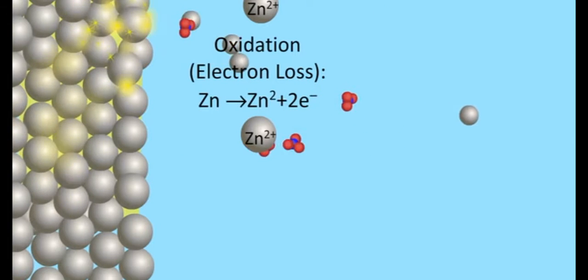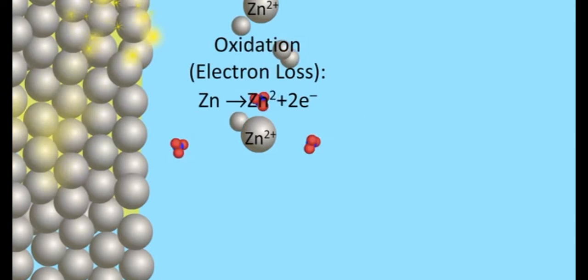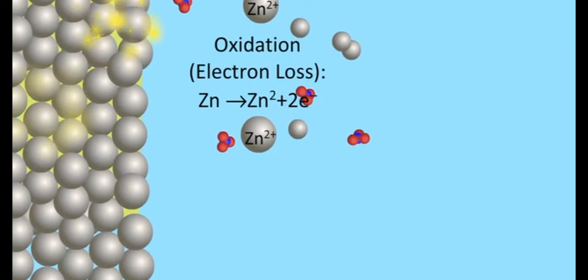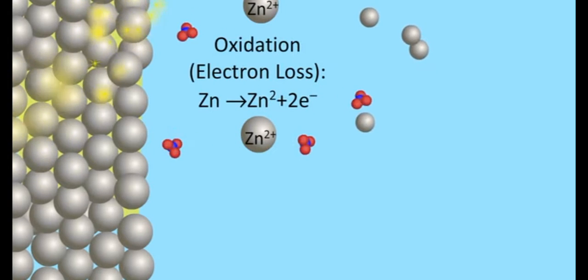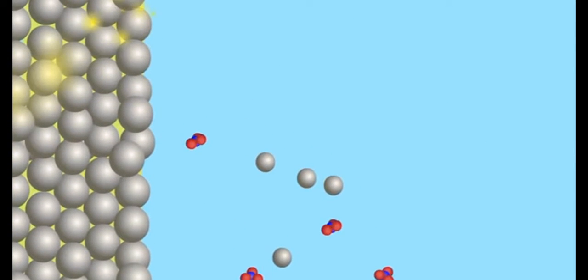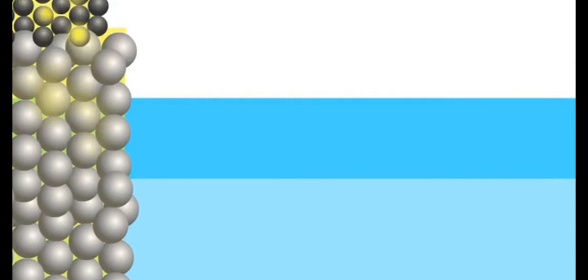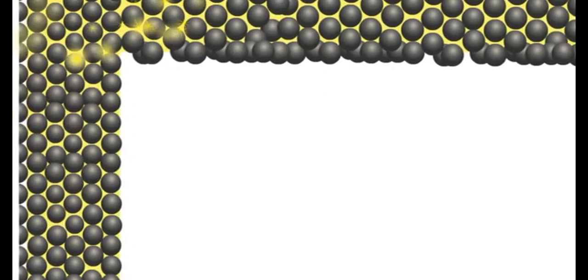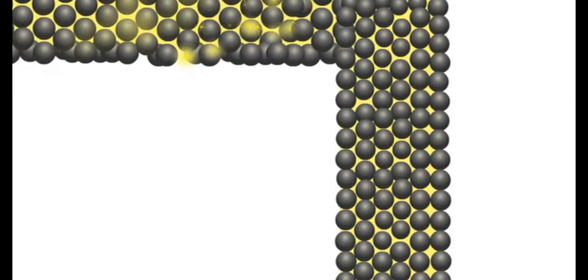The concentration of Zn2+ ions in the ZnSO4 solution increases. There is a flow of electrons in the external circuit, from zinc rod to copper rod. Therefore, the current flows from copper to zinc. It should be noted that as a convention,